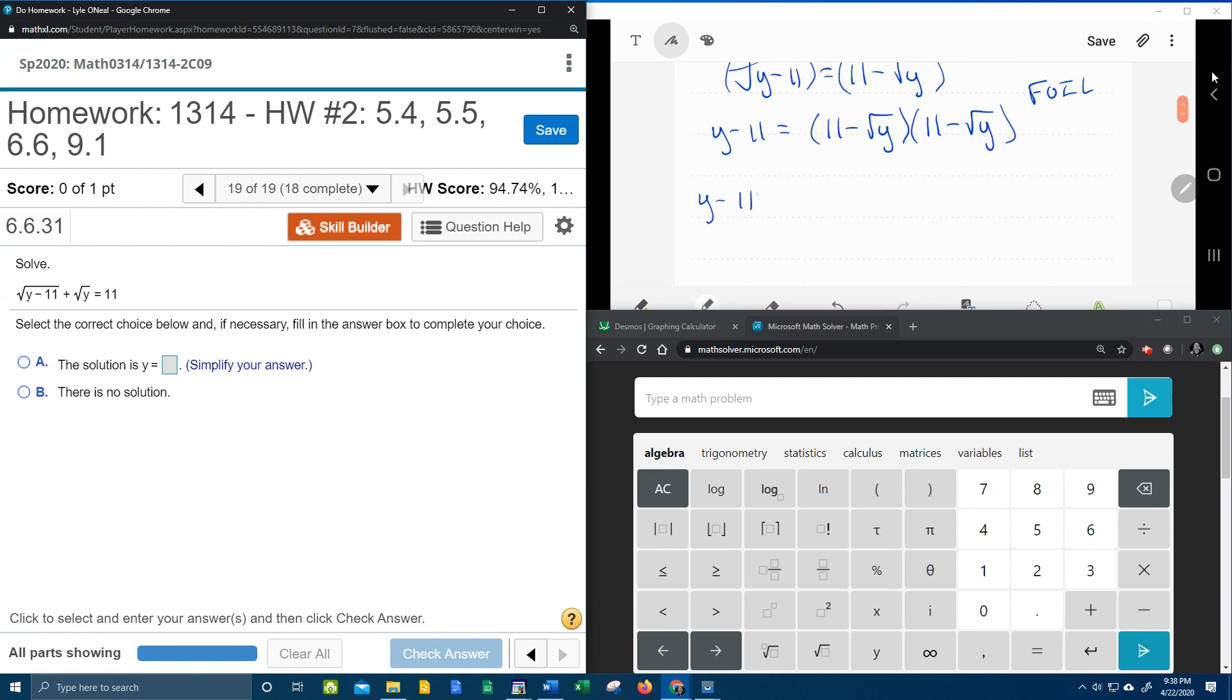We've got our y minus 11 equals, let's FOIL it. 11 times 11, that is 121, on the outside. Now, I've got 11 times the square root of y, and what I'm going to do is notice that the coefficient of that square root is negative 1, that's what we multiply by 11. So negative 1 times 11, that's negative 11, and the square root of y comes with it. On the inside, again I've got an understood negative 1 times 11, that's negative 11, and the square root of y comes with it.